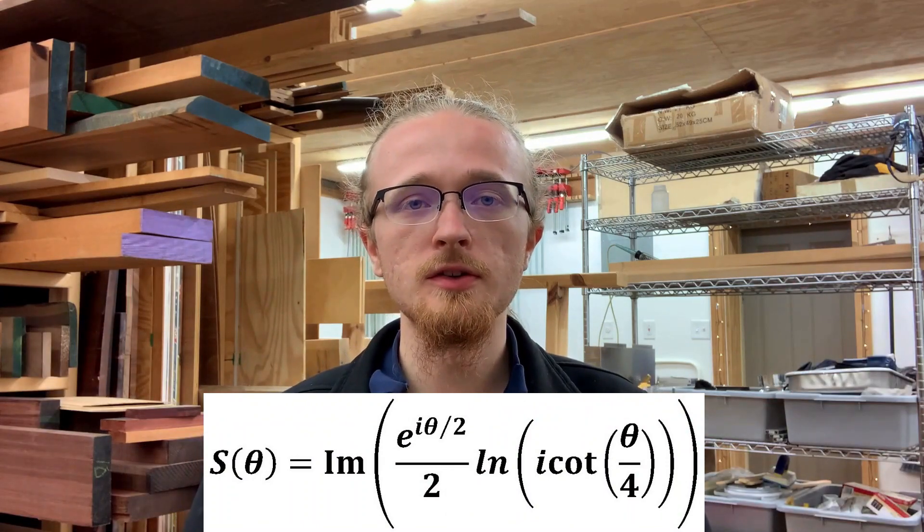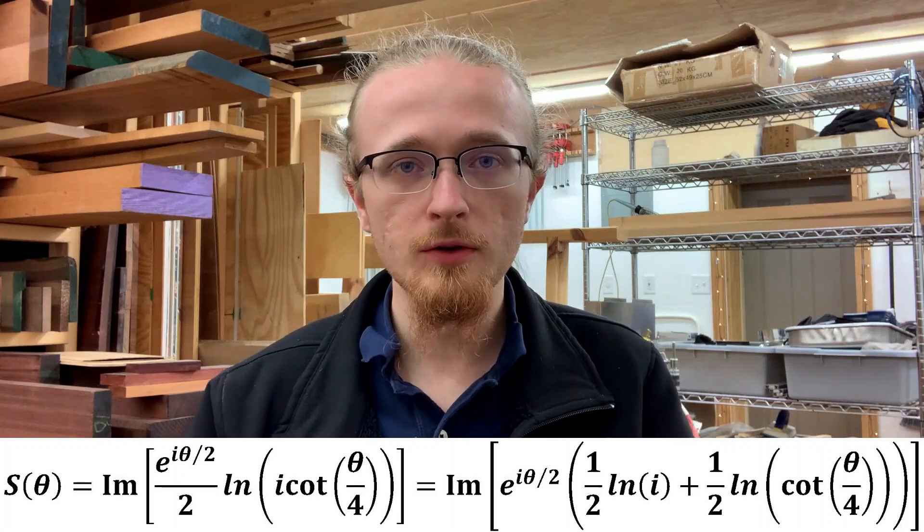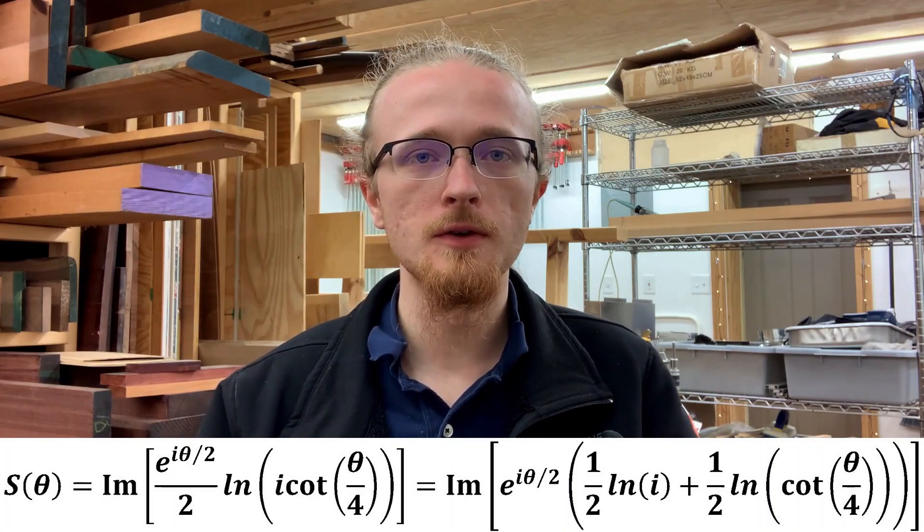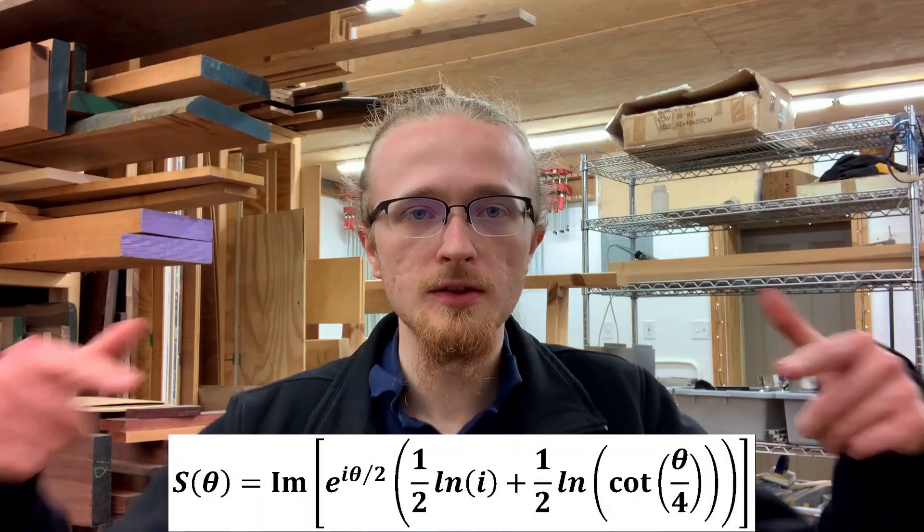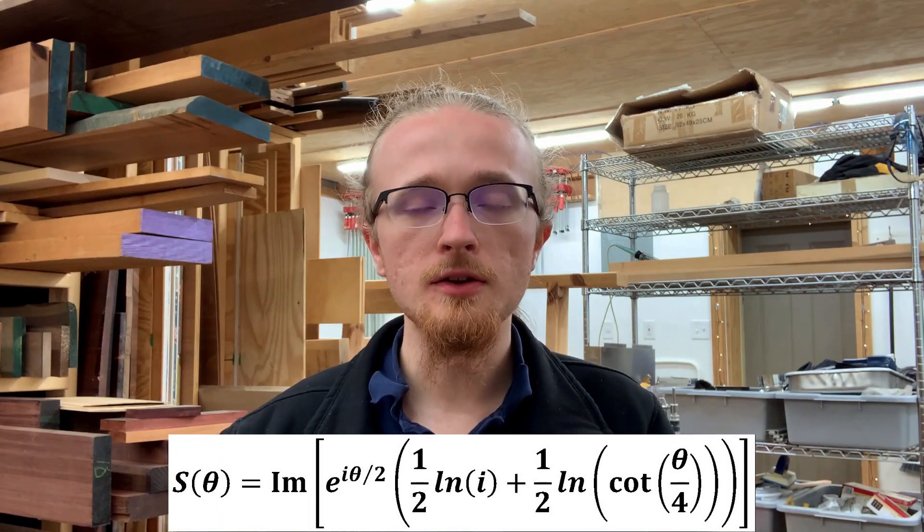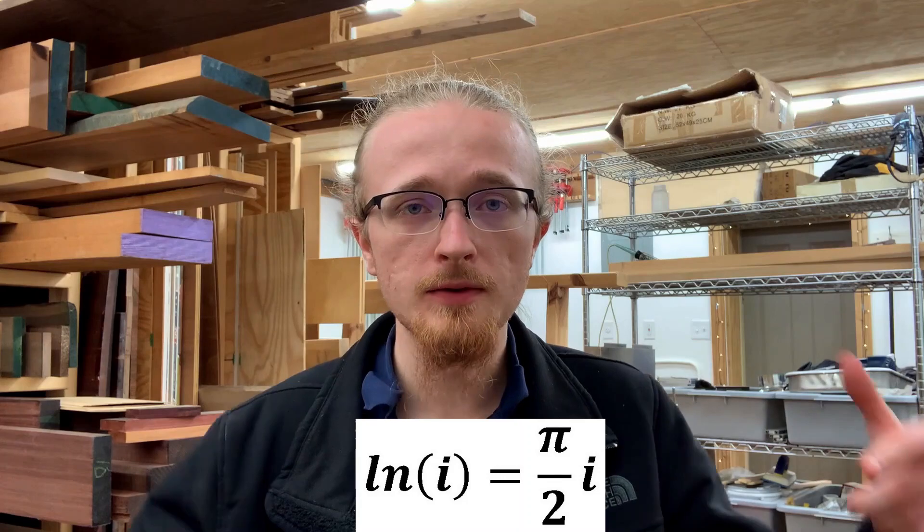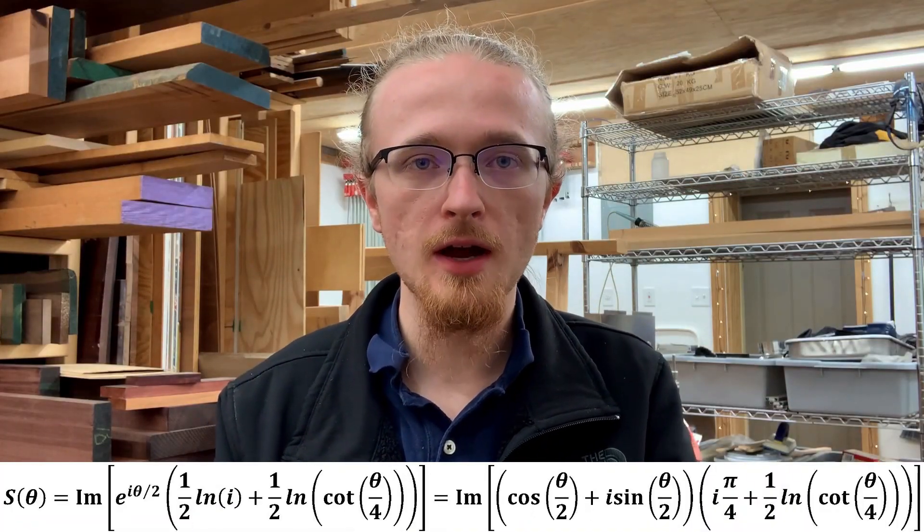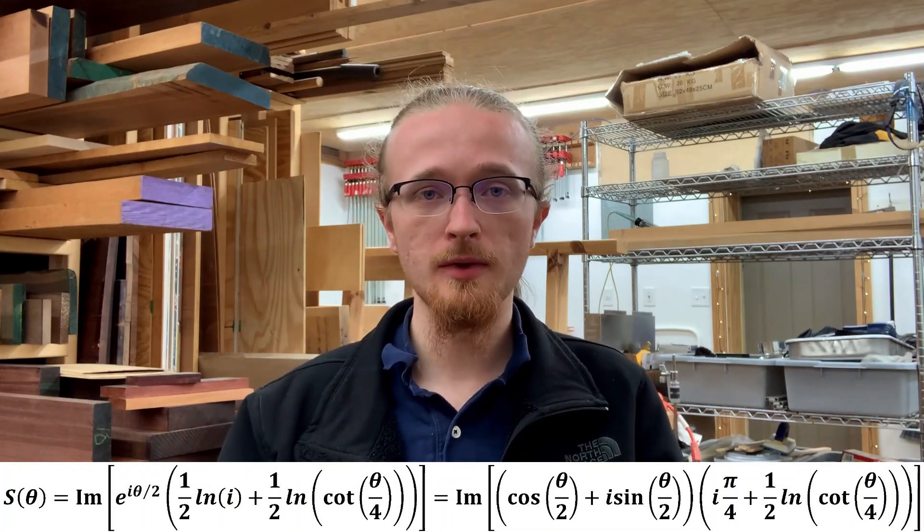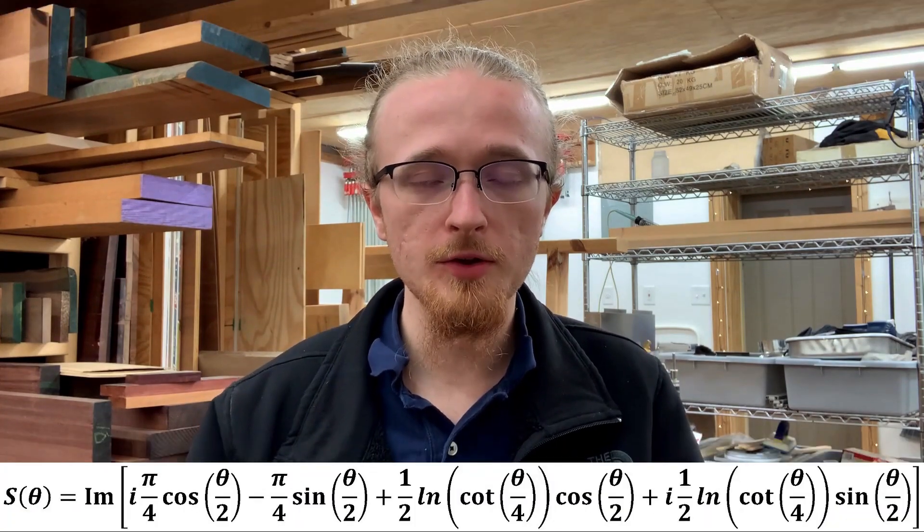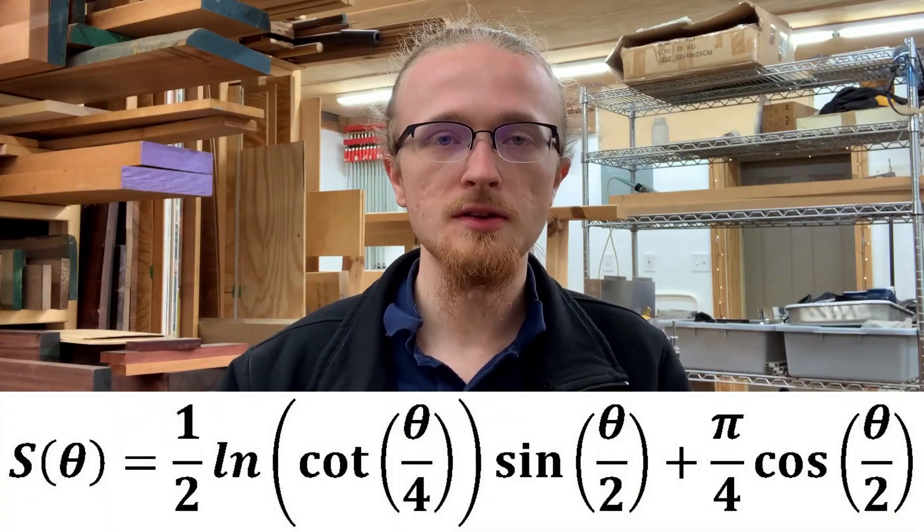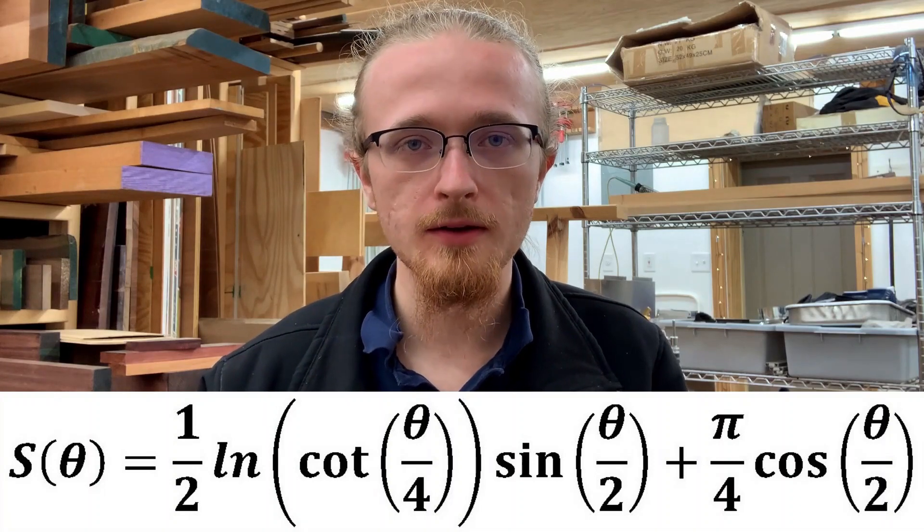From here, the next step is to separate that i out of the logarithm. We can use the property of the logarithm that a logarithm of a product is the sum of the logarithms of the factors to write it like this, and at this point we're almost done. If we recall that the logarithm of i is equal to i pi over 2, then we arrive here. We can then use Euler's formula directly to write that complex exponential out front in terms of its real and imaginary part, leaving us with this. We can then multiply that out and isolate the real and imaginary part, and then just take the imaginary part, and we have our final answer.